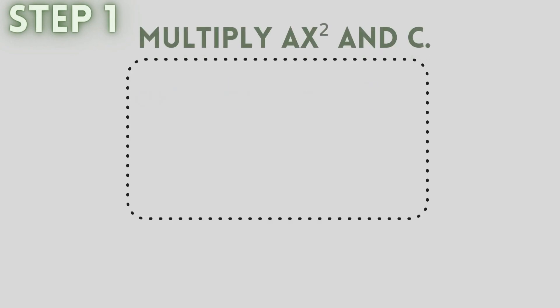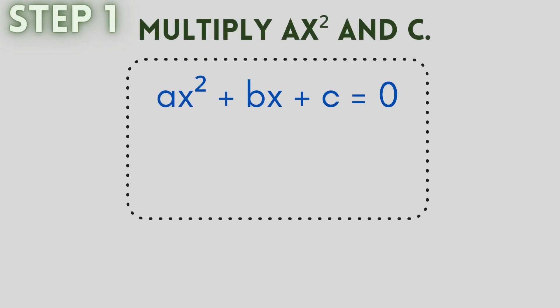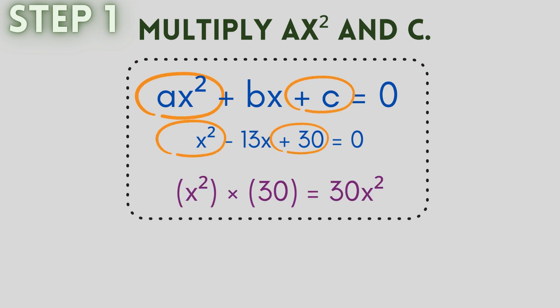The fourth step is to multiply ax square and c. Clearly, we will get x² into 30 which is equal to 30x². Now we need to do some extra work. We need to figure out what are the combinations of variables and numbers that when multiplied give us 30x².